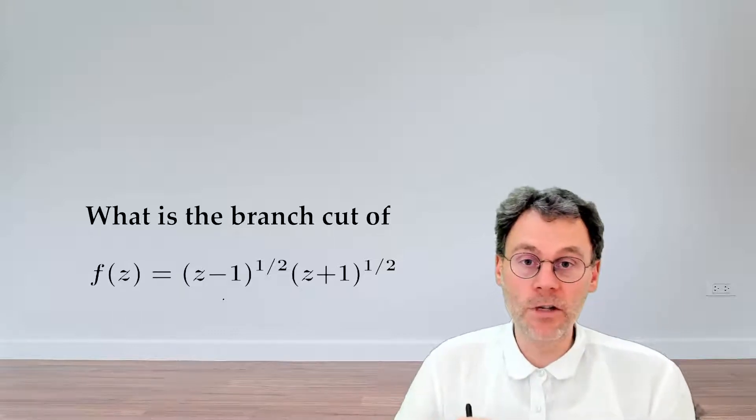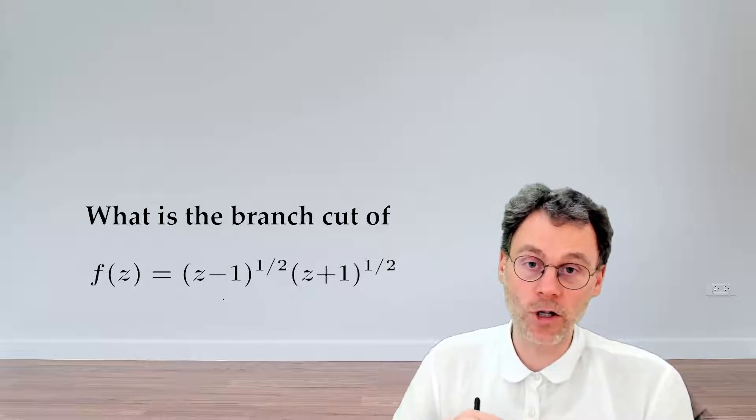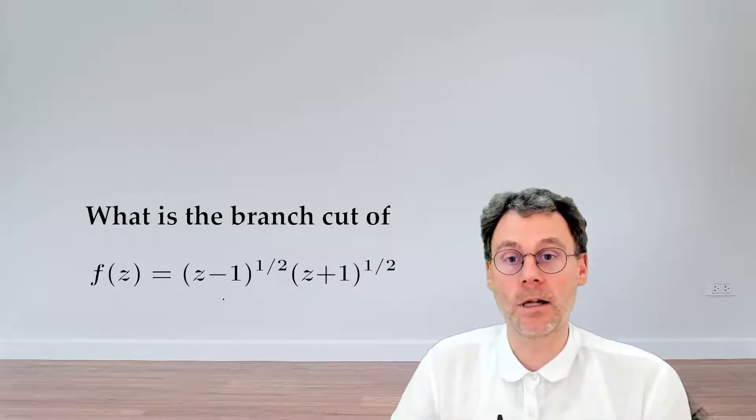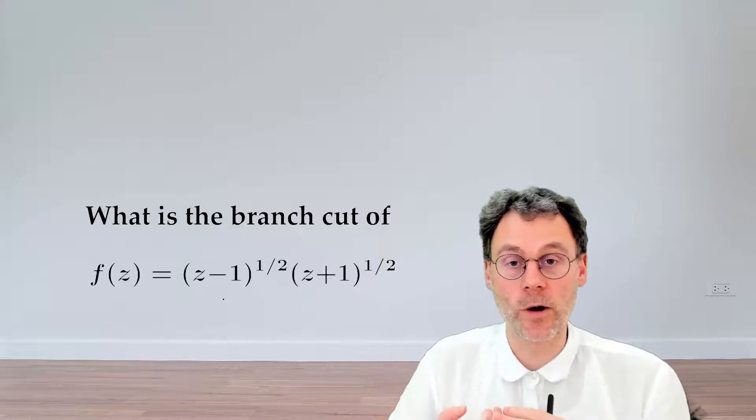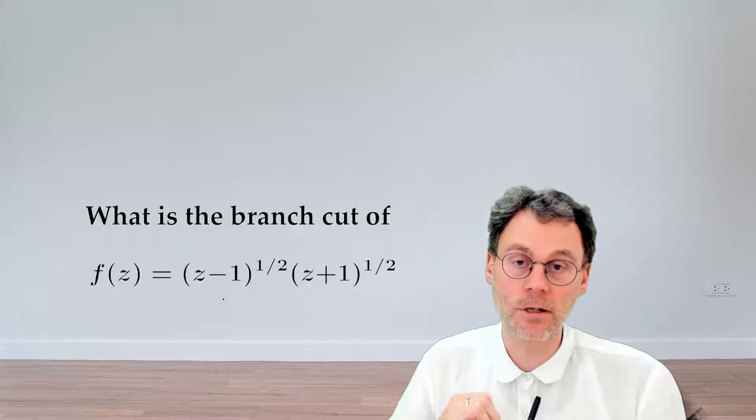In one of the previous exercises, we've seen a different recipe to make this function single-valued, and that's basically the following. We look at the arguments of our square root function, and then we look at the angle of that argument.